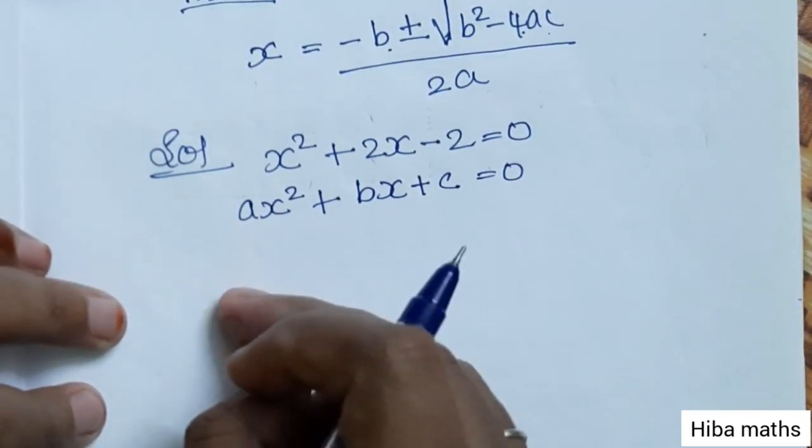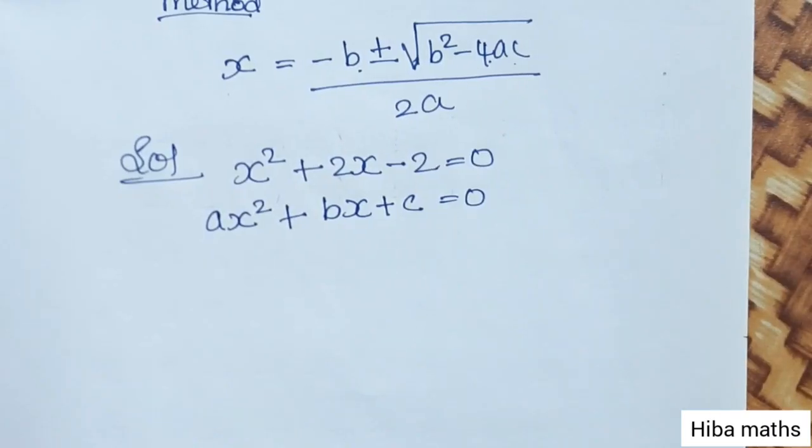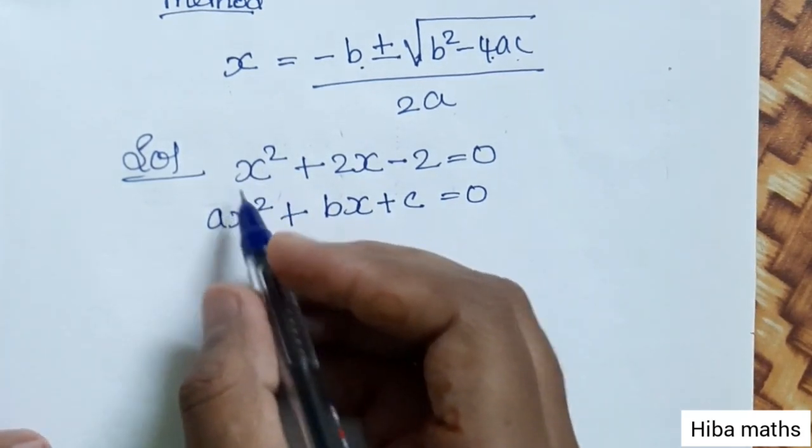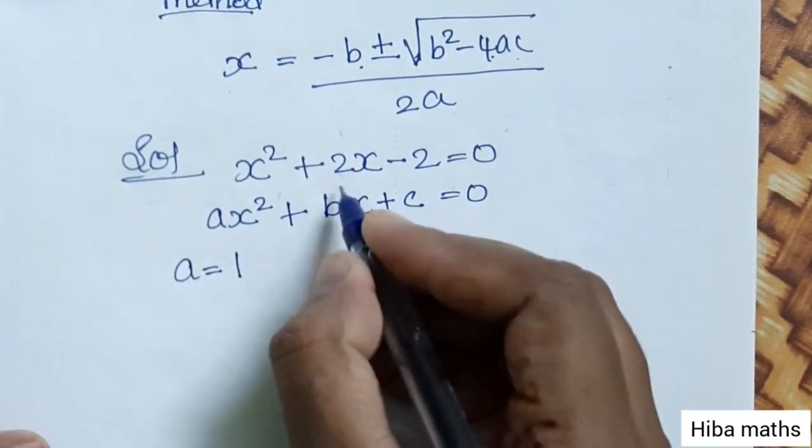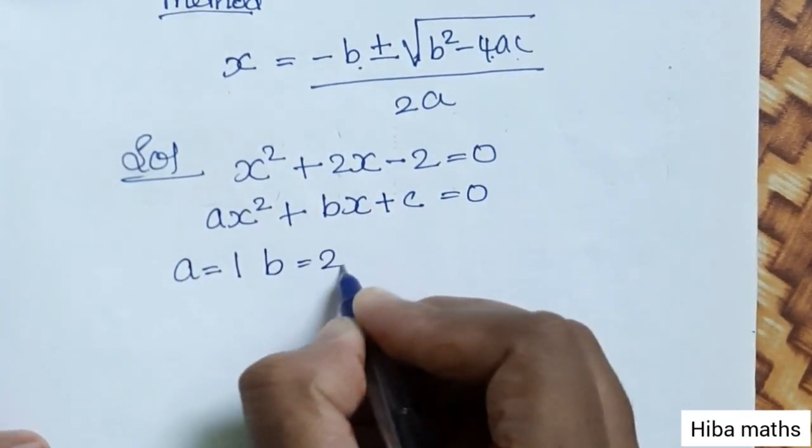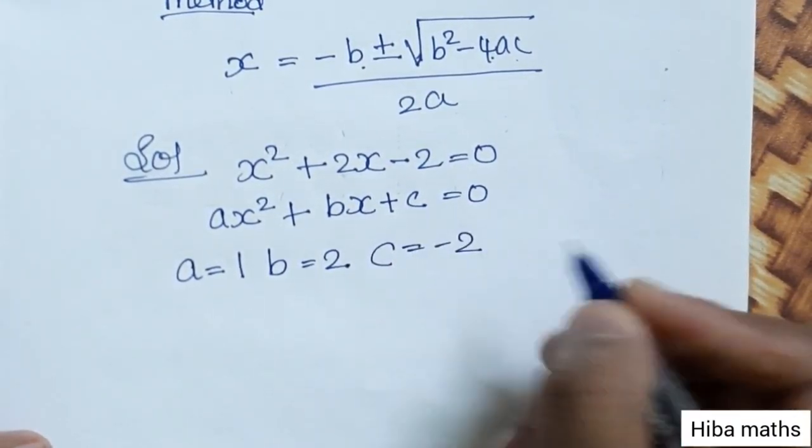If we compare, the coefficient of x² is 1, so a equals 1. b equals 2, and c equals minus 2.